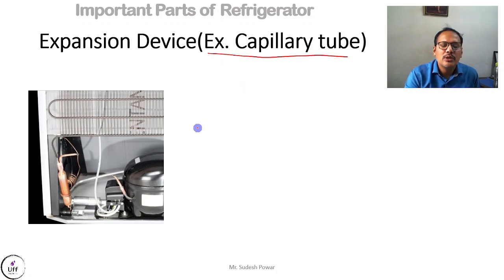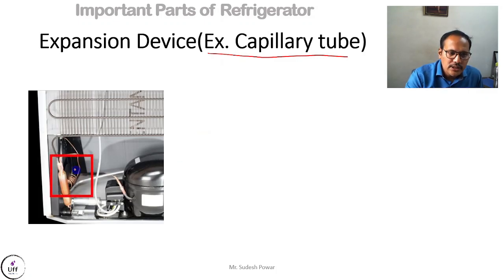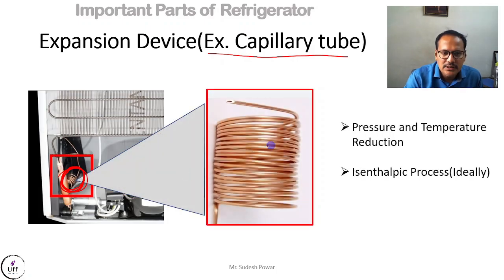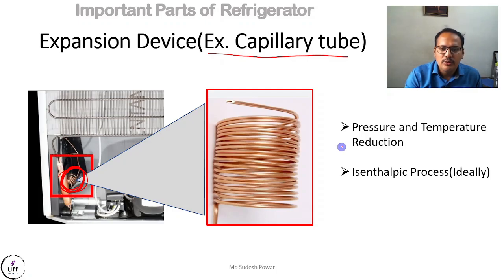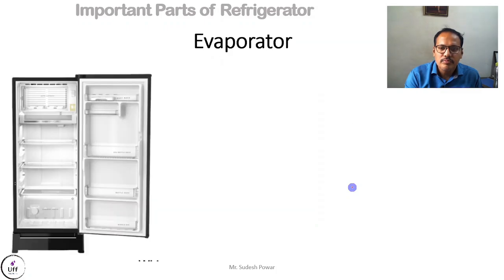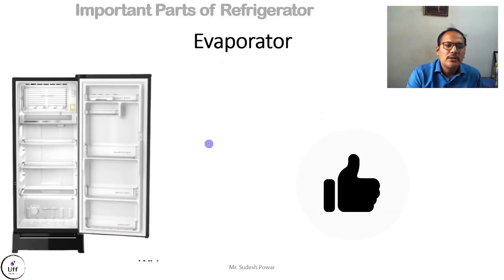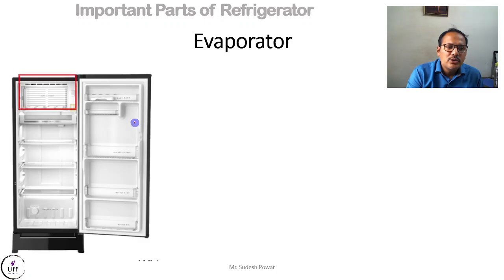The third important part is the expansion device. In domestic refrigerators we normally use a capillary tube, though other expansion devices like expansion valves also exist. The capillary tube has a diameter less than 6 mm. The main function of the capillary tube is to reduce the pressure and temperature. Because of the reduction in pressure, a cooling effect is obtained at the end of the capillary tube. This process is isenthalpic, meaning enthalpy at the inlet equals enthalpy at the outlet.